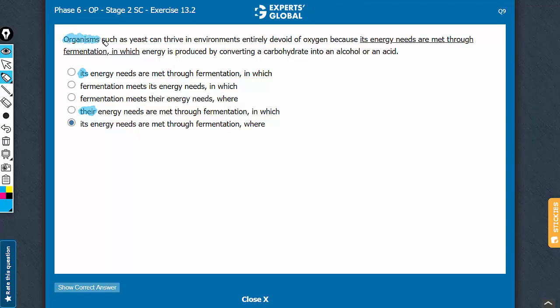See, it is organisms such as yeast. Such as yeast is an example. The noun here is organisms. The main subject, organisms. This its or their has to refer to organisms, something plural.